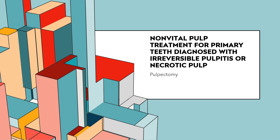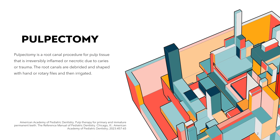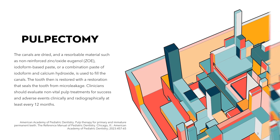Now we're going to look at the actual technique and research behind non-vital pulp treatment for primary teeth diagnosed with irreversible pulpitis or a necrotic pulp. A pulpectomy is a root canal procedure for pulp tissue that is irreversibly inflamed or necrotic due to caries or trauma. The root canals are debrided and shaped with hand or rotary files and then irrigated with a solution. After the canals are irrigated, they are dried with paper points and a resorbable material such as non-reinforced zinc oxide eugenol (ZOE), an iodoform-based paste, or a combination paste of iodoform and calcium hydroxide is used to fill the canals. The tooth is then restored with a restoration that seals the tooth from micro leakage. Clinicians should evaluate non-vital pulp treatments for success and adverse events clinically and radiographically at least every 12 months.